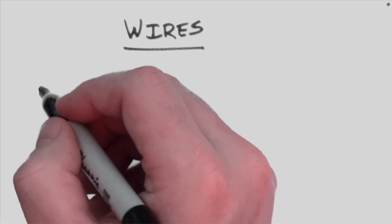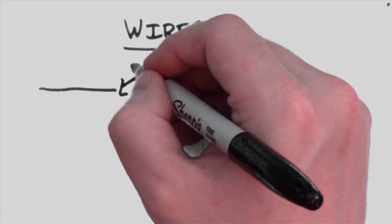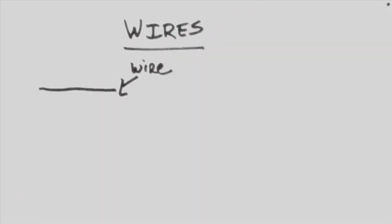Lastly, these symbols wouldn't do much good if they weren't connected, so there's a number of ways to show that things are connected. For example, a simple wire is just a line connecting two components.